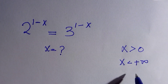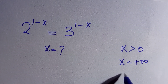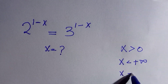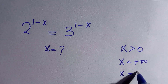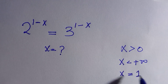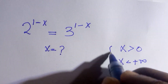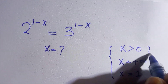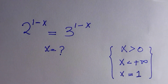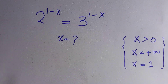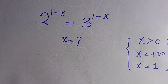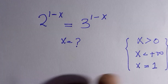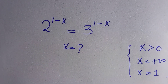But at positive infinity, x must equal 1. So here are the conditions attached to it, which means x equals 1 satisfies this equation. But how do we get this? Let's see how to solve it.